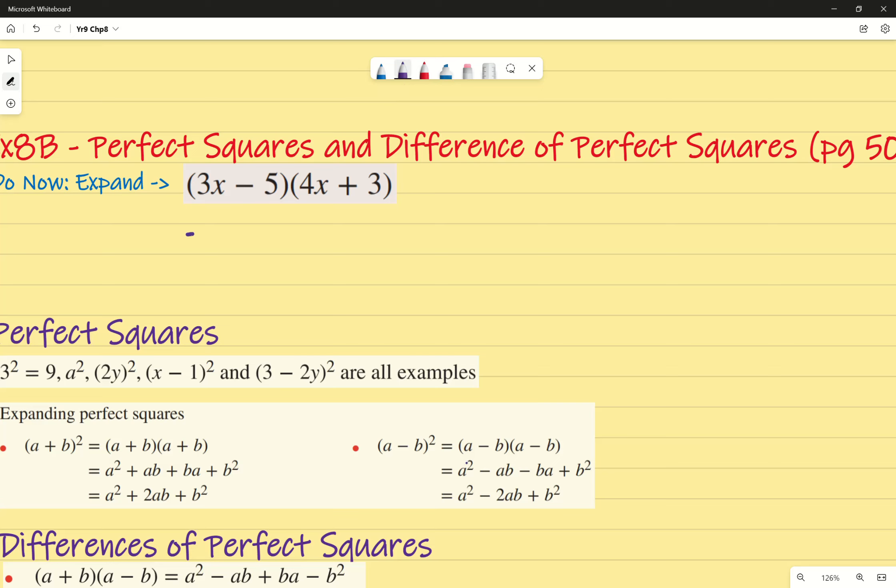That equals 12x squared, that's my first term. Outer: I multiply 3x by the positive 3, which gives me 9x. Inner: I multiply the inside two, so that's -5 multiplied by 4x, which gives me -20x. Finally, I have -15 because that's -5 multiplied by 3.